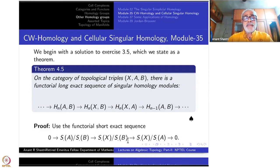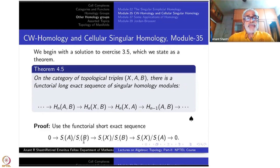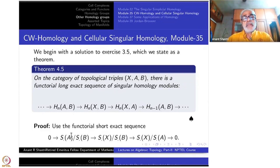Similarly, S(X)/S(B) with S(A)/S(B) sitting inside it gives another quotient. By whichever isomorphism theorem — Noether's first or second — the kernel of this map is precisely S(A)/S(B). So you have such a short exact sequence, and taking the long exact sequence gives: H_I of AB, then H_I of XB, then H_I of XA, then H_{N-1} of AB. The theorem and proof is over.